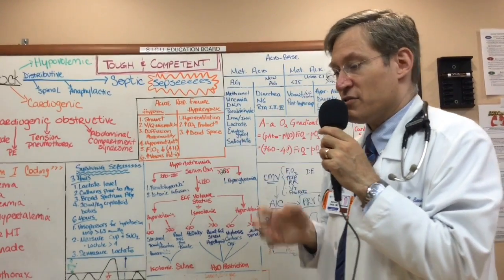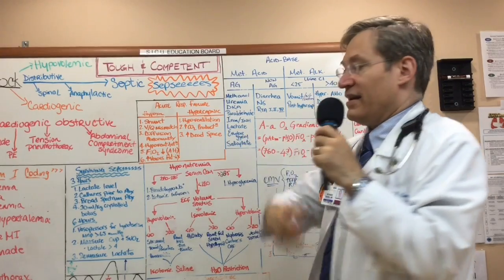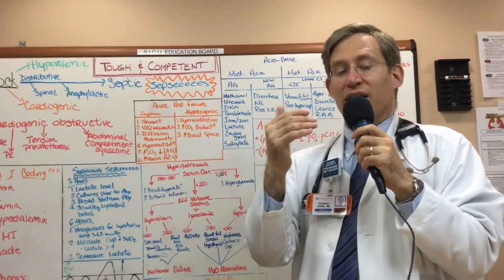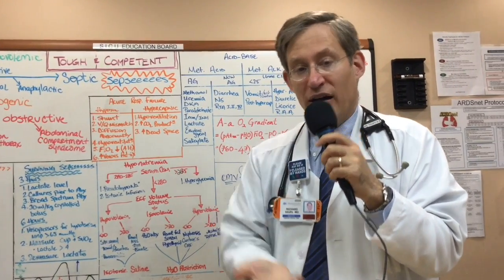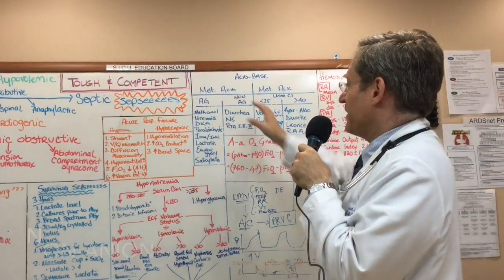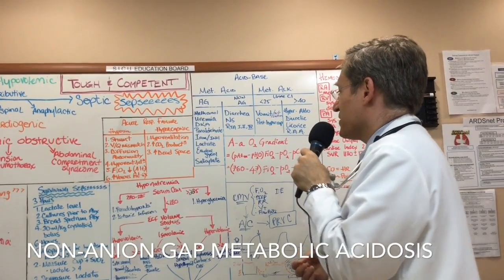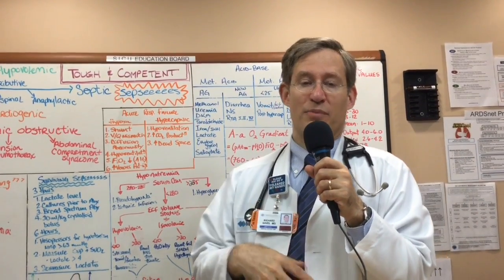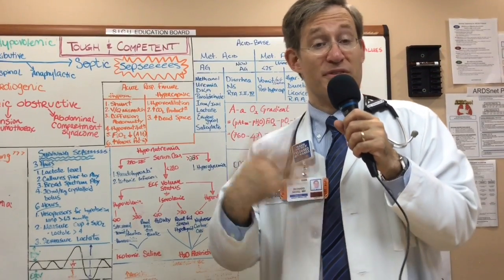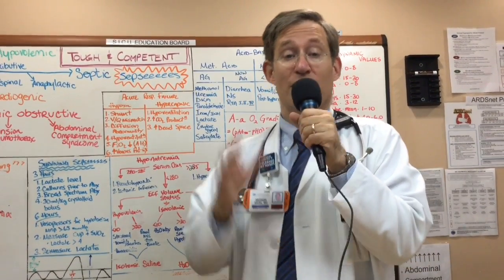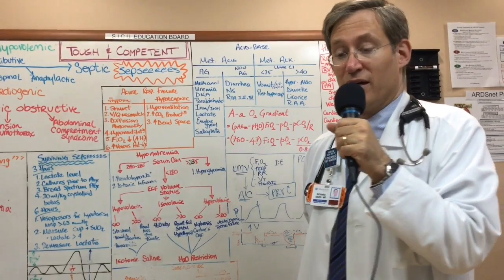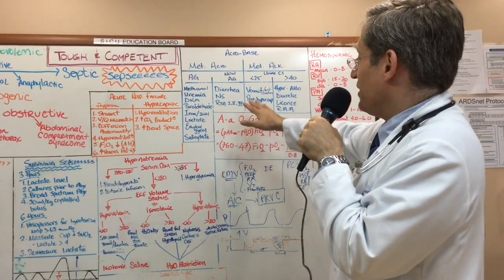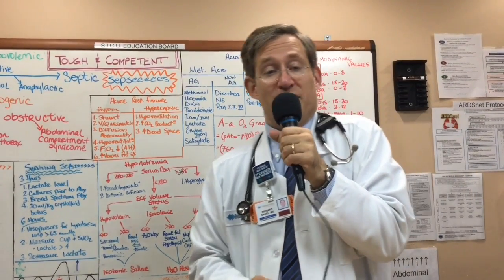The next part of metabolic acidosis is non-anion gap metabolic acidosis. Think of it as the patient either losing bicarbonate from their gut or their kidney, or having been resuscitated with a bicarbonate-poor substance like normal saline. Losing bicarb from the gut usually means diarrhea; losing it from the kidney refers to renal tubular acidosis.